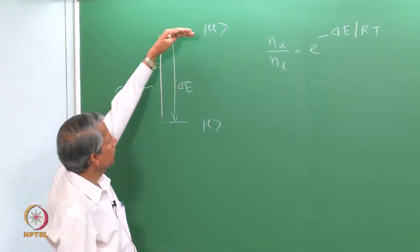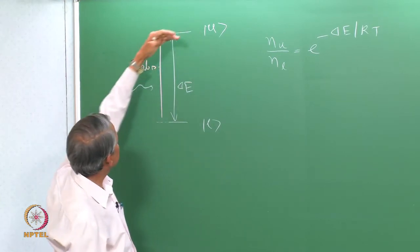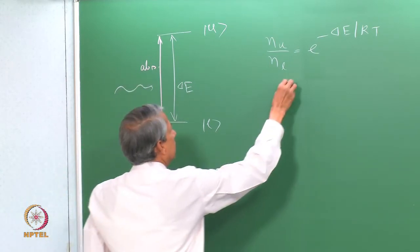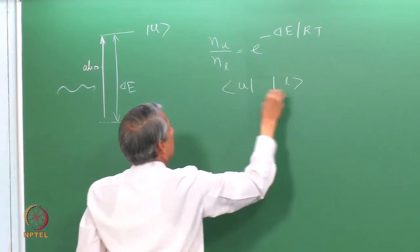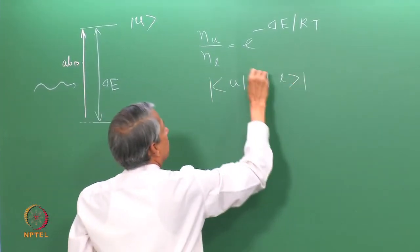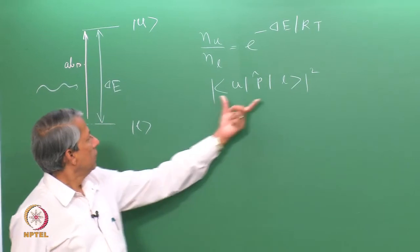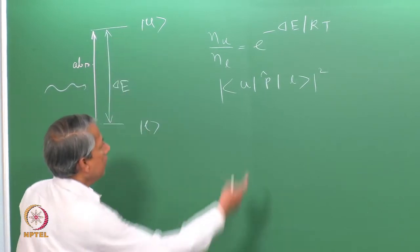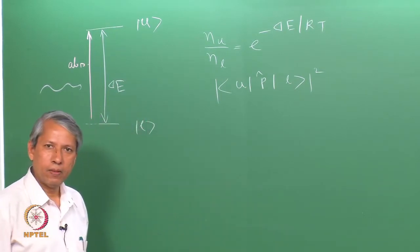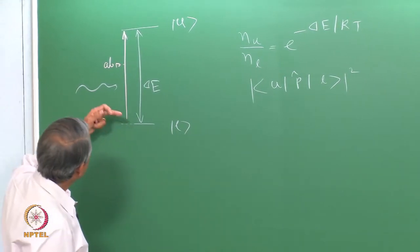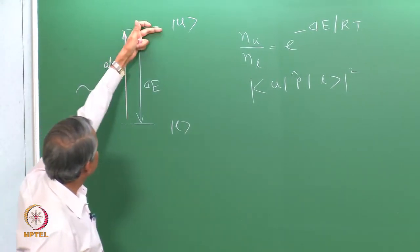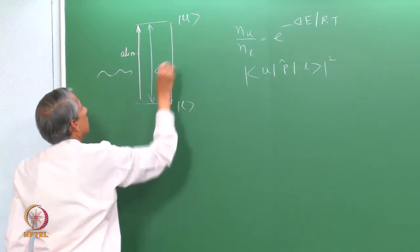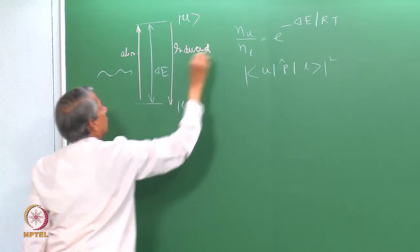But there are also some particles in the upper level which can undergo transition from upper to lower because of this radiation. Because the selection rule we have seen earlier — the probability of transition from lower to upper or upper to lower, the form is the same due to the perturbation from the radiation. So the probability of transition is the same whether it goes upward or downward. That is the perturbation due to the radiation, and we call that induced emission or stimulated emission.